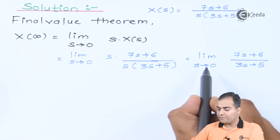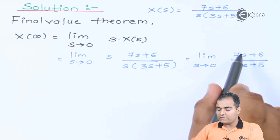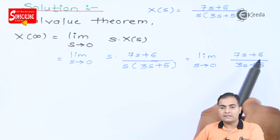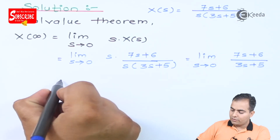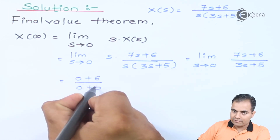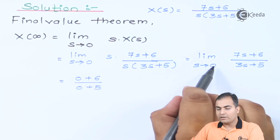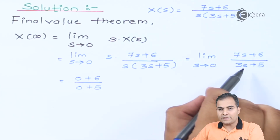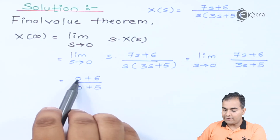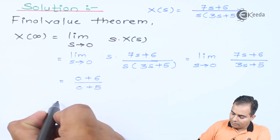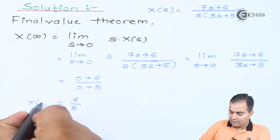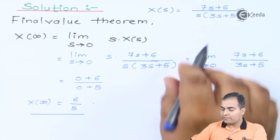Applying the limit, both s terms are replaced by 0. So we get 0 plus 6 in the numerator and 0 plus 5 in the denominator, because 0 times anything is 0. The final result is 6 divided by 5. This is the final value of X(s).